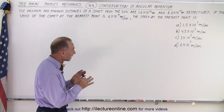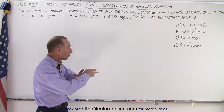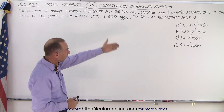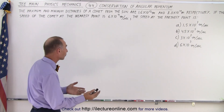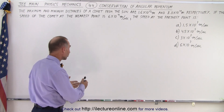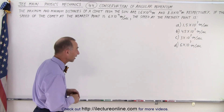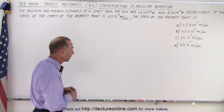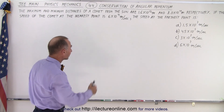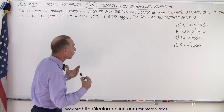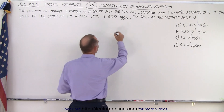We know that when the comet is farther away, it will be moving slower, and all four answers are slower than the speed at which it has when it's closer. So we cannot automatically eliminate any of those answers. The best way to approach this — the title gives it away a little bit — is the conservation of angular momentum.